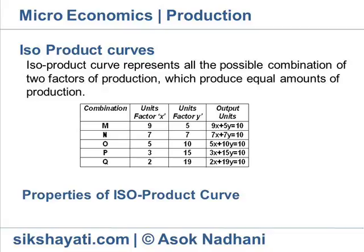Example: A given output can be achieved by employing different combinations of factors of production. Let us assume that a firm can produce 10 units of a commodity by employing any of the following alternate combinations of two factors X and Y.